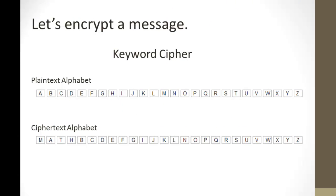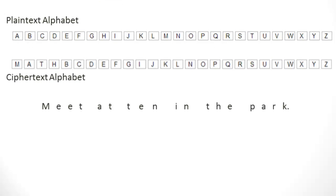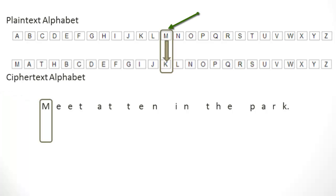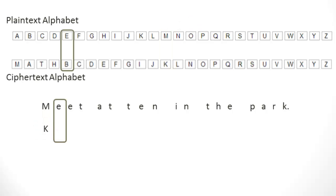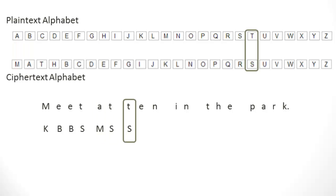Let's go ahead and encrypt our own message. Move the cipher text alphabet right below the plain text and write out the message: 'Meet at 10 in the park.' We associate each plain text letter with its cipher text equivalent. M corresponds to K, so K goes down. E encrypts to B, so place B. The next E goes to B again. T goes to S, A goes to M, T to S, T to S, and so on.